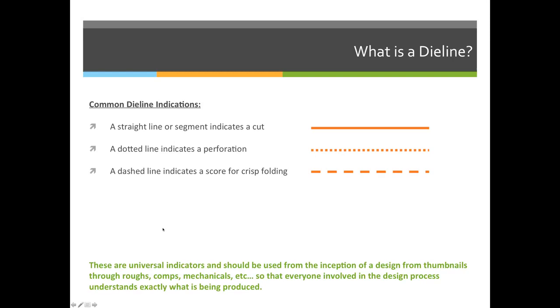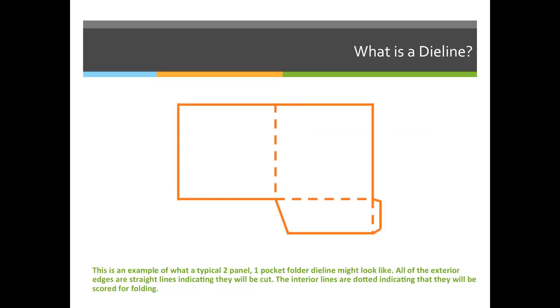Now that we can identify what a straight line, a dotted line, and a dashed line mean in a die line, we can begin to start looking at die lines, and we should know what those lines represent.